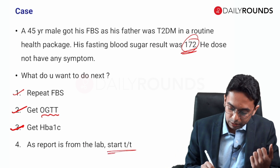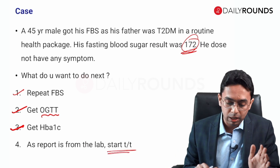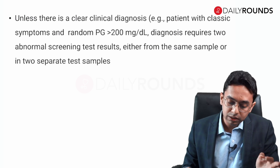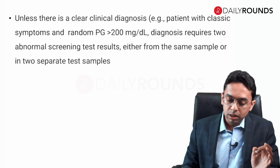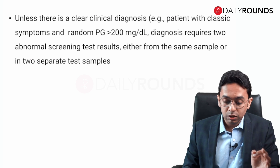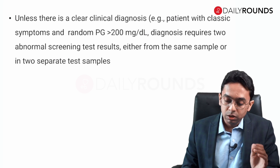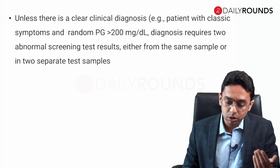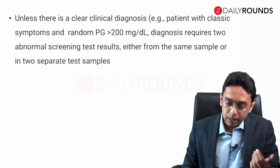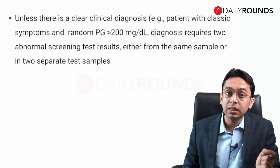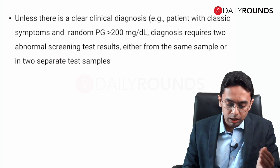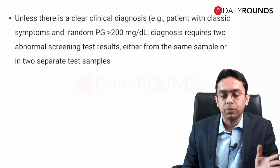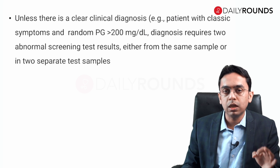Please don't start treatment and don't label the patient as diabetes. What the guideline says — these are direct pickup lines — unless there is a clear clinical diagnosis, meaning there are symptoms: a patient with classical symptoms and random blood plasma glucose more than 200. They require two abnormal screening tests, either from the same sample or in two separate samples. That is what the guideline says.